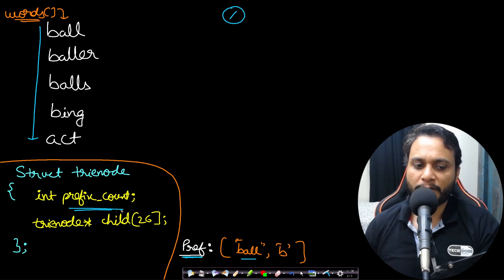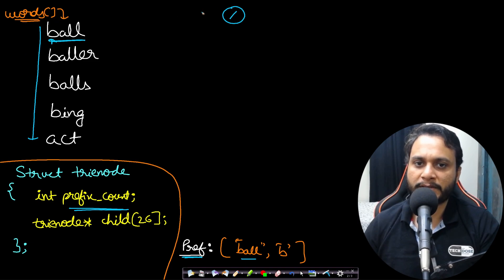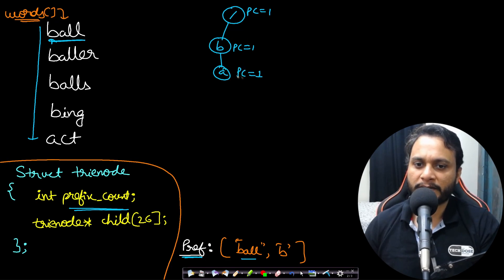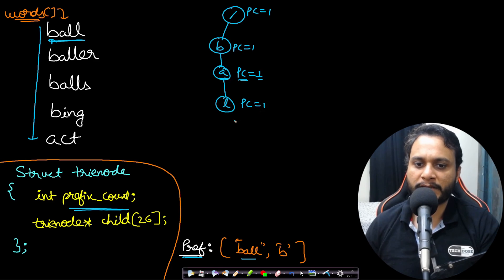The trie has a root node and we maintain a prefix counter at each node. The prefix counter tells how many words have passed through that character. Inserting 'ball': we insert 'b' — prefix counter becomes one. Then 'a' is inserted with prefix counter one, meaning one word has the prefix 'ba'. Continuing, 'l' and 'l' are inserted with prefix counter one, completing the insertion of 'ball'.